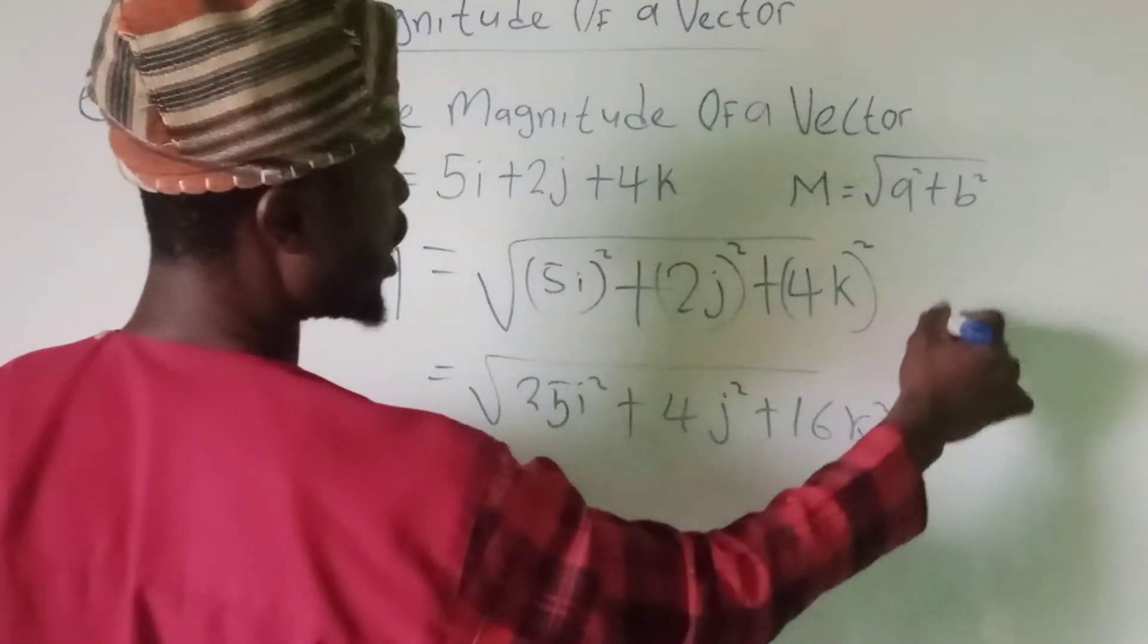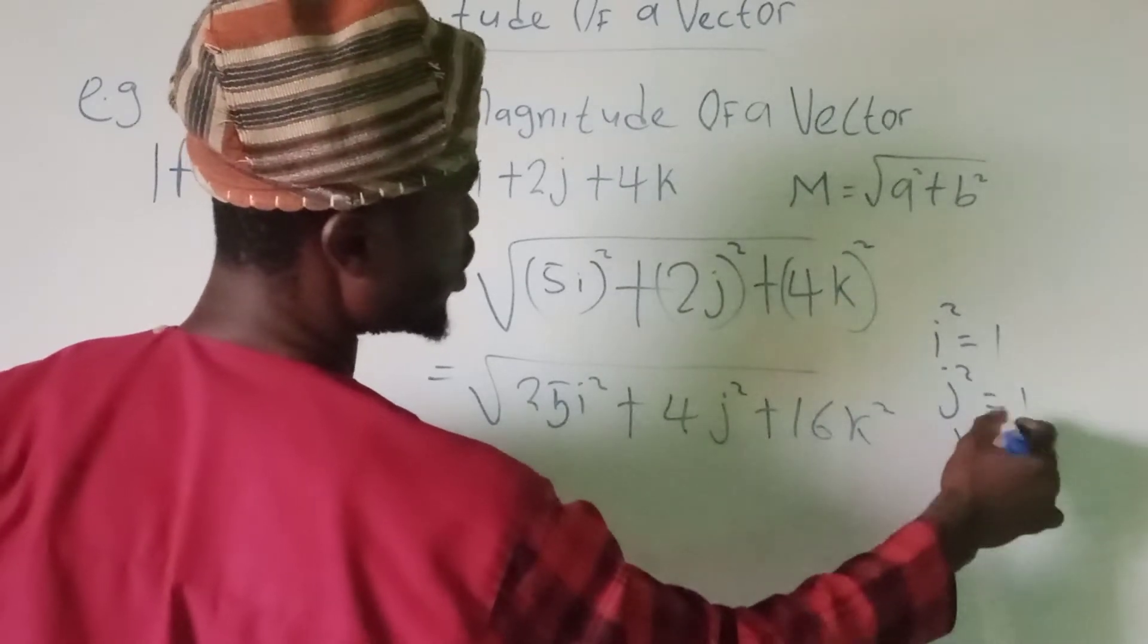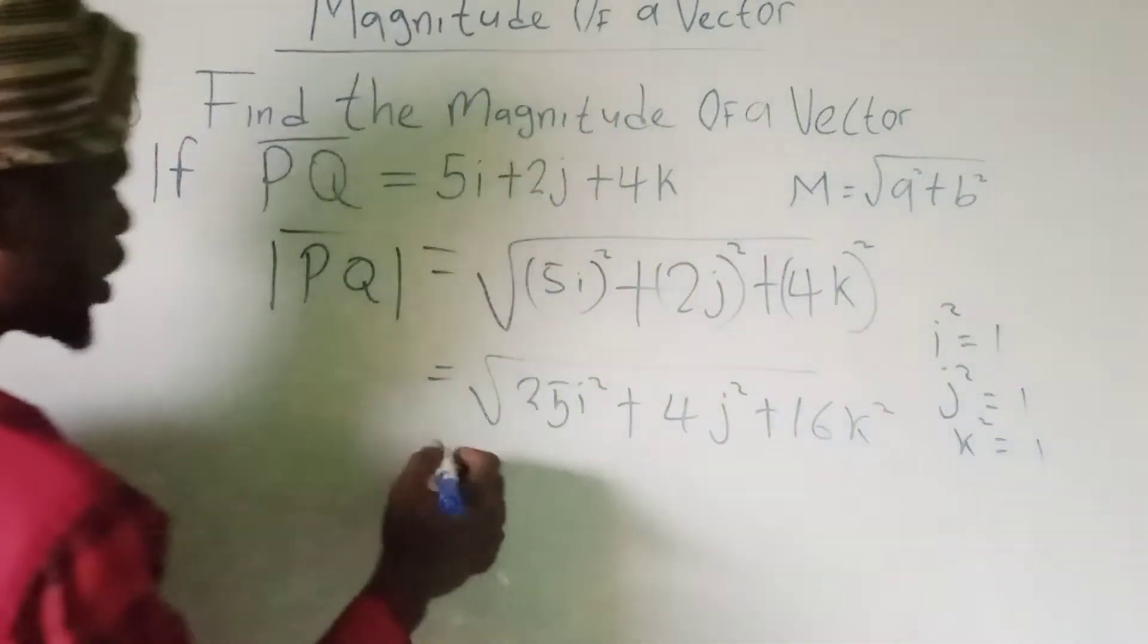In vector, I squared is equal to 1, J squared is equal to 1, K squared is equal to 1.